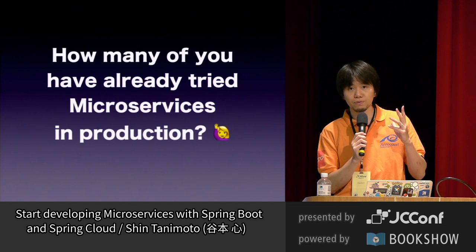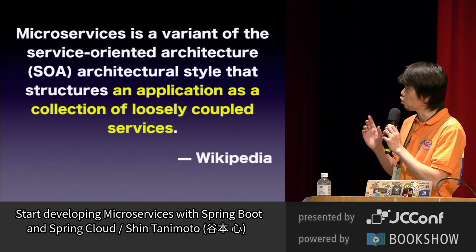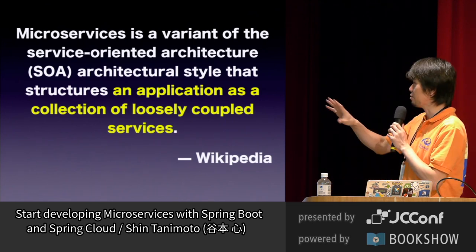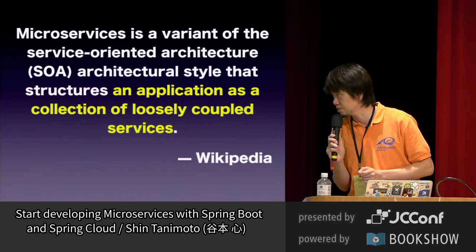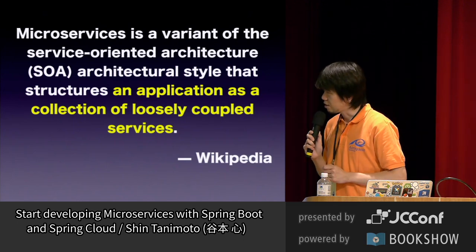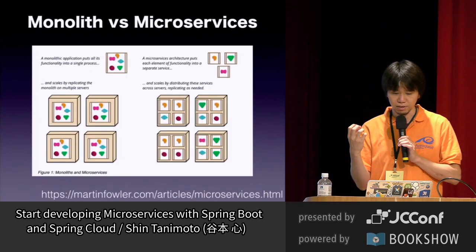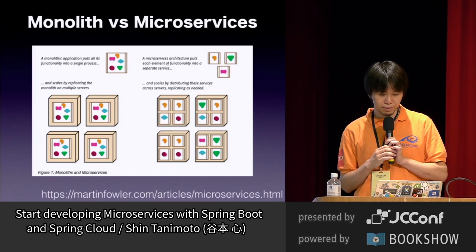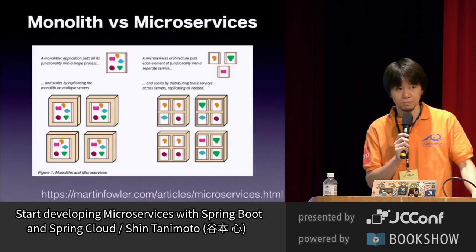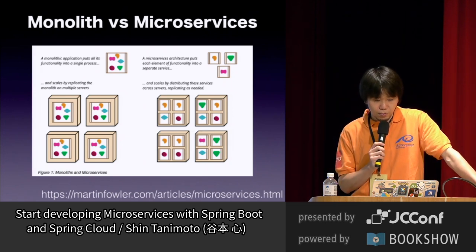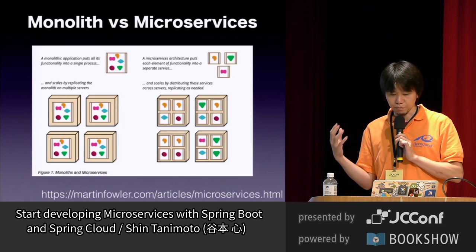So, what is microservices? Wikipedia says microservices is a variant of the service-oriented architecture — an architectural style that structures an application as a collection of loosely coupled services. Microservices are basically a construct of small services. This is Martin Fowler's explanation: the left side shows monolithic applications and the right side shows microservice applications. A monolithic application has all functions in a single process, while microservices have several separate functional processes.